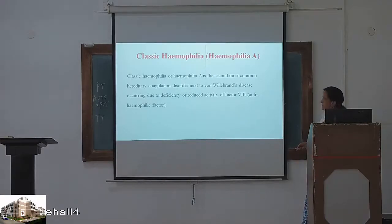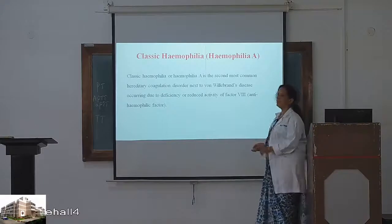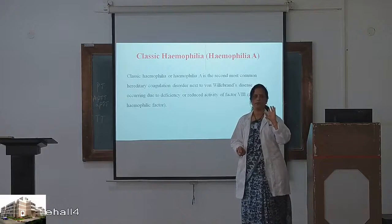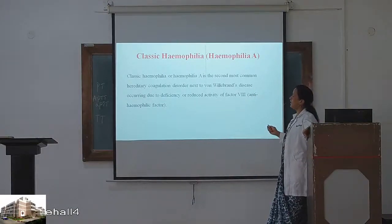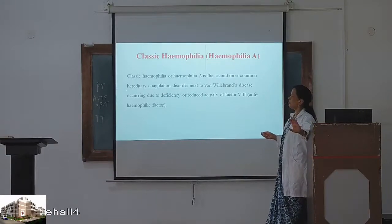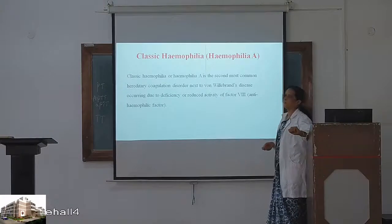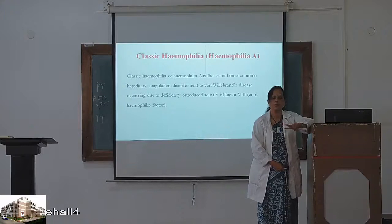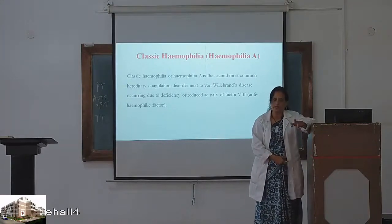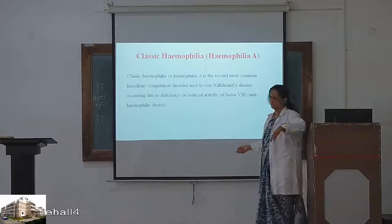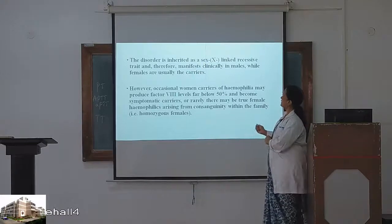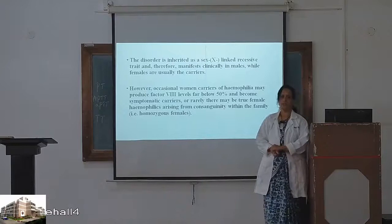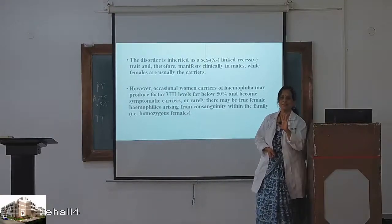We have now come to the important disease — classic hemophilia. Hemophilia is a coagulation disorder where the blood does not clot when it bleeds. There are two types: hemophilia A and hemophilia B. Classic hemophilia is hemophilia A, the second most common hereditary coagulation disorder next to von Willebrand's disease. This disorder is inherited as a sex-linked recessive trait.